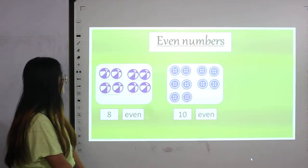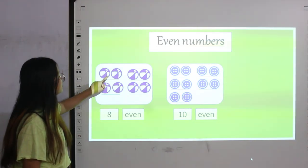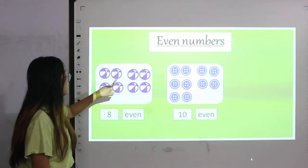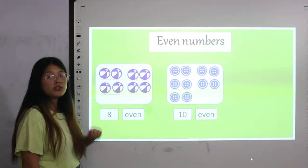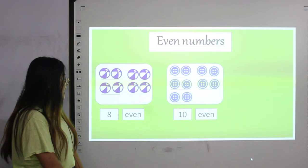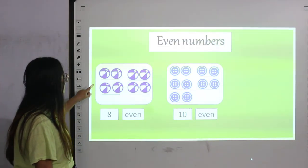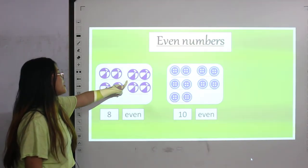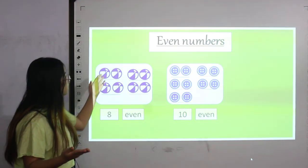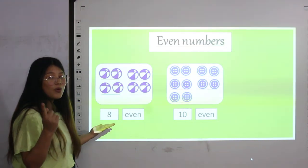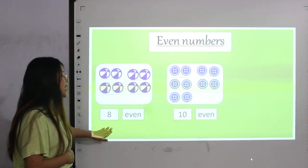We have some balls over here. Let's count — one, two, three, four, five, six, seven and eight. We have eight balls. To see if eight is even or odd, we have to pair them up. These two are in pair, these two are in pair, these two are in pair, and these two are in pair as well. No one is left alone, so eight is an even number.